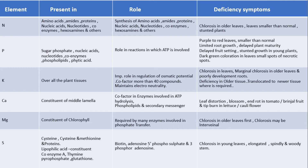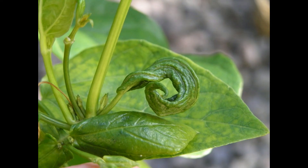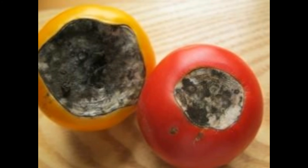Potassium is translocated to newer tissue where it is required. The fourth compound is calcium, which is a constituent of the middle lamella. Its role is as a cofactor in enzymes involved in ATP hydrolysis, and it is present in phospholipids and acts as a secondary messenger. Deficiency symptoms are leaf distortion and blossom end rot.